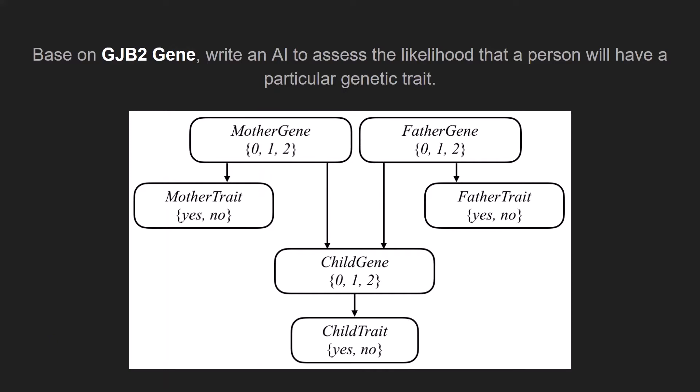Based on this kind of RADT gene algorithm, we want to write an AI to assess the likelihood that a person will have a particular genetic trait. According to the genes of the parents, we can calculate the probability of the child to get a specific gene and also if the child might have the specific trait, yes or not.